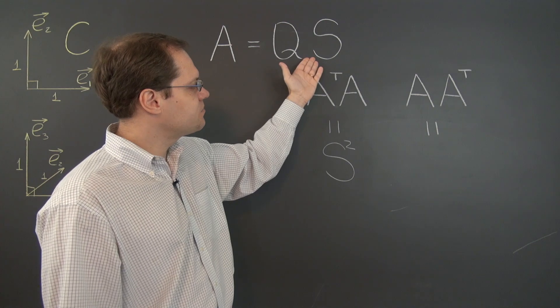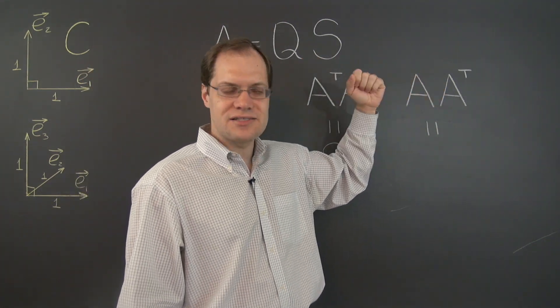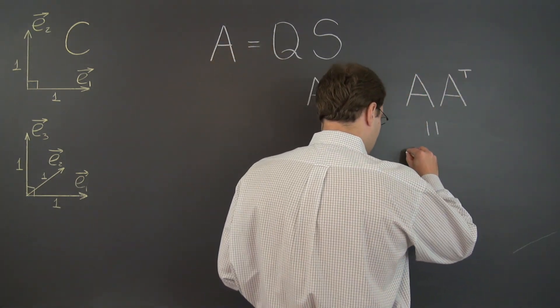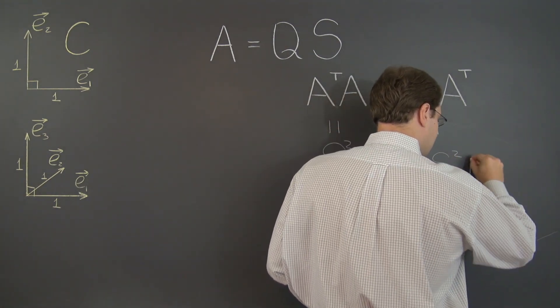Well A equals QS and A transpose equals S because S is symmetric Q transpose. So we're left with Q S squared Q transpose.